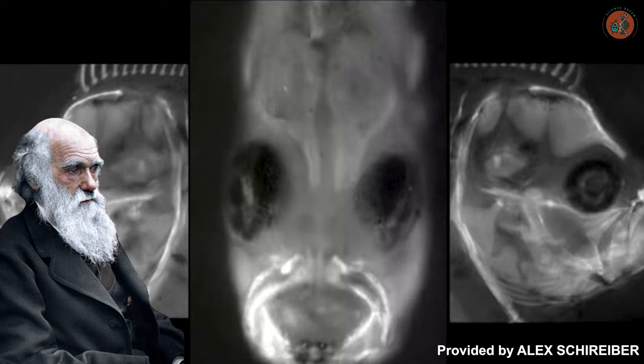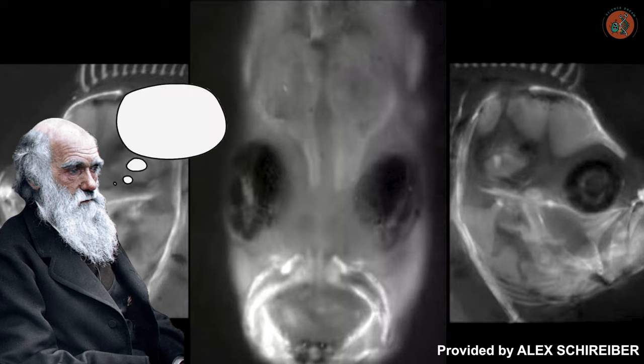Even Charles Darwin, the father of evolutionary theory, found the peculiar developmental process and appearance of flounders baffling in terms of their evolutionary path.